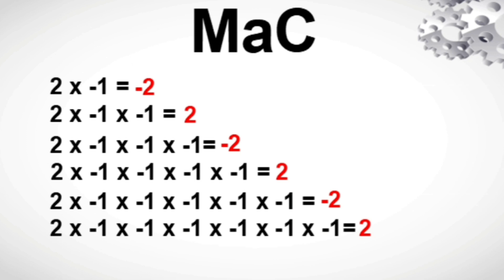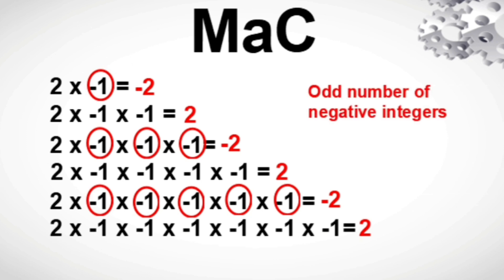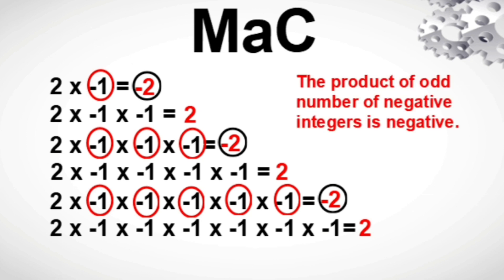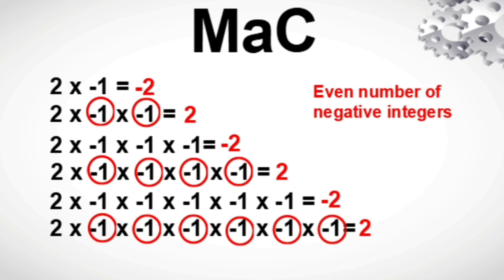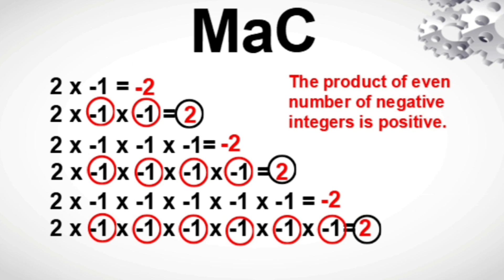Can you tell the connection between the product and the number of negative integers in the factors? Equations number 1, 2, and 3 have an odd number of negative integers with a product of negative 2. Therefore, the product of an odd number of negative integers is negative. Equations 2, 4, and 6 have an even number of negative integers with a product of positive 2. Therefore, the product of an even number of negative integers is positive.